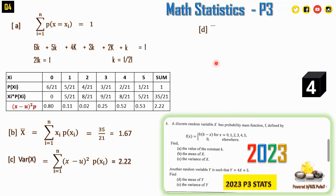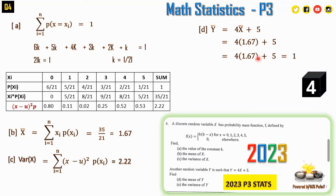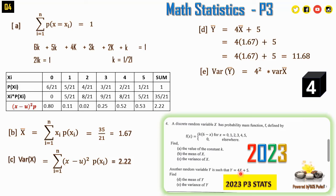For Y = 4X + 5: E(Y) = 4×E(X) + 5 = 4×1.67 + 5 = 11.68. For the variance, constants do not affect spread, so Var(Y) = 4²×Var(X) = 16×2.22 = 35.52.